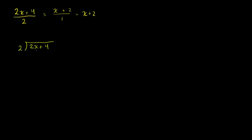2 goes into the highest degree term — ignore the 4. 2 goes into 2x how many times? It goes into 2x x times. Put the x in the x place. x times 2 is 2x. And just like traditional long division, you now subtract. 2x plus 4 minus 2x is 4. And then 2 goes into 4 how many times? It goes in 2 times — positive 2 times. Put that in the constants place. 2 times 2 is 4. You subtract. Remainder 0.